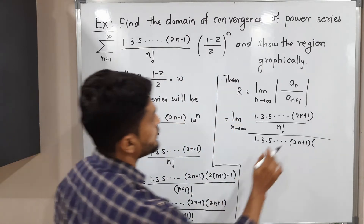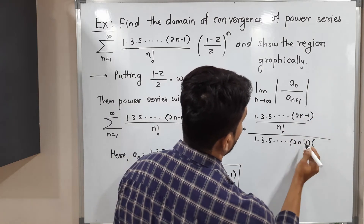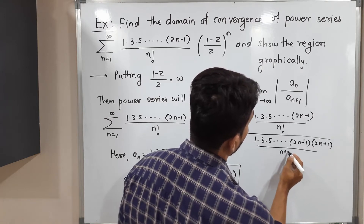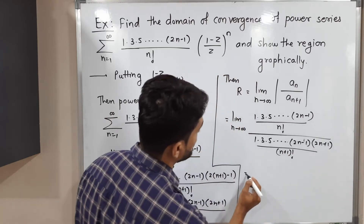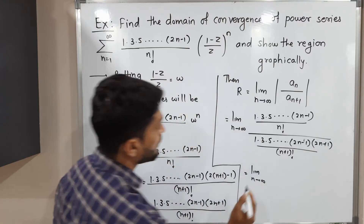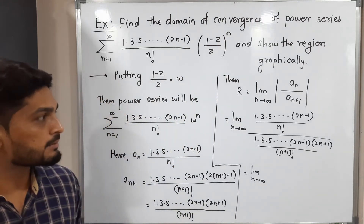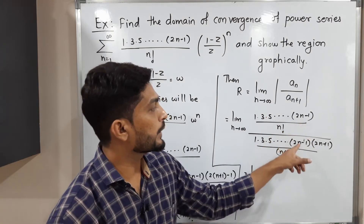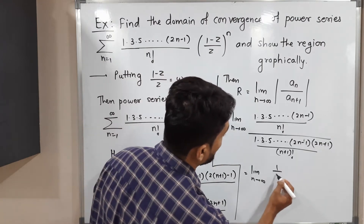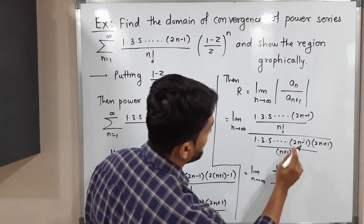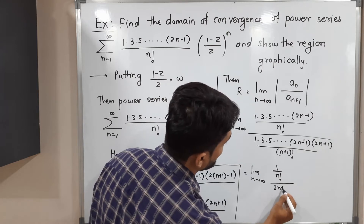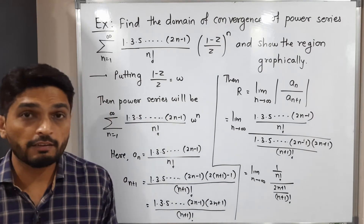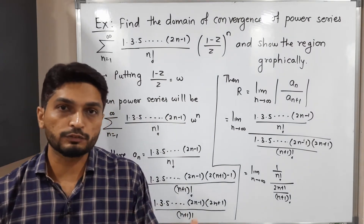So the full expression is: limit as n tends to infinity of [1·3·5···(2n−1) / n!] divided by [1·3·5···(2n−1)·(2n+1) / (n+1)!]. Canceling common terms 1, 3, 5, ..., (2n−1), we are left with 1/n! in the numerator divided by (2n+1)/(n+1)! in the denominator.